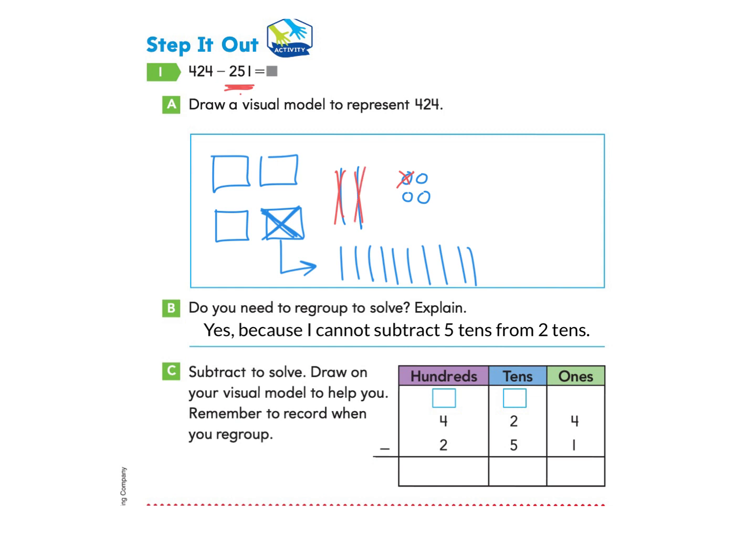And so now we can subtract five tens. One, two, three, four, five. Great job. And then we'll look at the hundreds. We need to subtract two hundreds so we can subtract one, two.